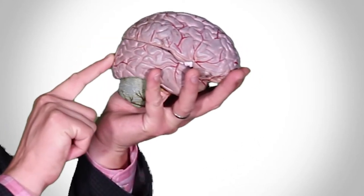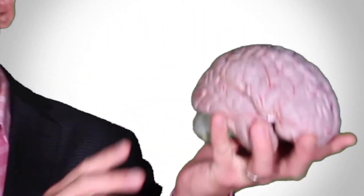This wrinkly stuff is your neocortex. It's actually a single sheet of cells, about the size of a dinner napkin.